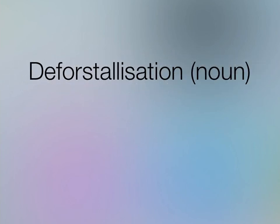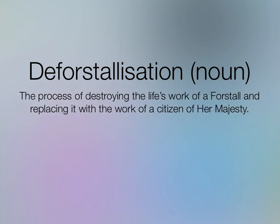So things are a lot simpler now with Sir Johnny in charge, and the process of what we like to call deforstallization began. Scott Forstall was the guy who got canned, which is why it's called deforstallization. And Sir Johnny Ive, being British, the definition of deforstallization is: the process of destroying the life's work of a Forstall and replacing it with somebody else's work.